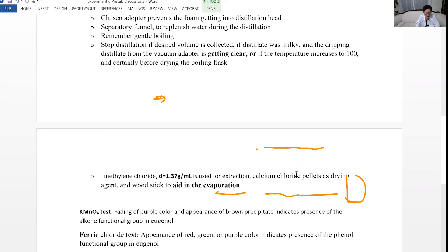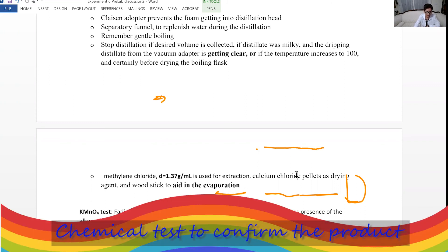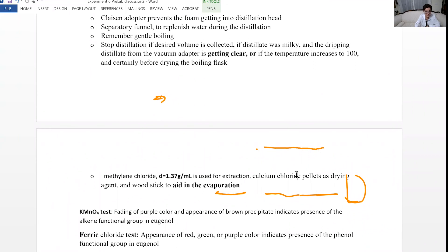Then you want to evaporate the methylene chloride because you don't need the methylene chloride, you need the oil. So evaporate the methylene chloride using low heat. You also use a wood stick to aid for evaporation. I had a friend who was saying that the liquid or the solvent is going to climb up the ladder and it would help the evaporation. Evaporation would take place faster. After the evaporation of the methylene chloride, you end up with oil, which for cloves is going to be eugenol.